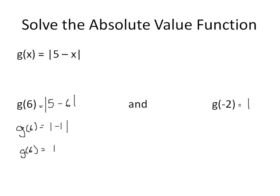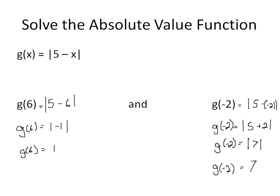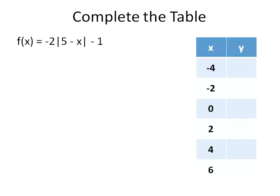Now let's look at the next example. G at the point negative 2 equals the absolute value of 5 minus negative 2. So 5 minus negative 2 is the same as 5 plus 2. So g(-2) equals 5 plus 2, which is positive 7. Anything inside the absolute value remains positive, so g(-2) equals positive 7.